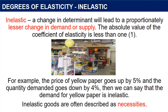Inelastic: The change in determinant will lead to a proportionately lesser change in demand or supply. The absolute value of the coefficient of elasticity is less than 1. For example, the price of yellow paper goes up by 5% and the quantity demanded goes down by 4%, then we can say that the demand for yellow paper is inelastic.